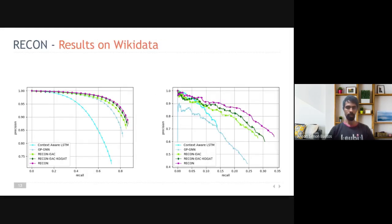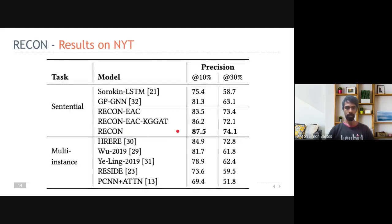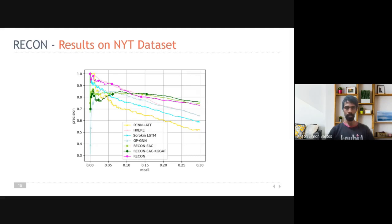As we can see from the results, we obtain a statistically significant output per result as compared to the baselines, which do not use context information. On the left, we see the micro results, and on the right, we see the macro precision recall on Wikidata. Similarly, on the NYT dataset, we obtain comparable results to the multi-instance baselines. And as can be seen from the PR curves, we are able to maintain a high precision at higher recall.